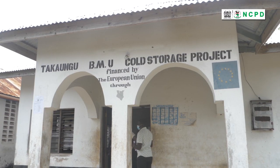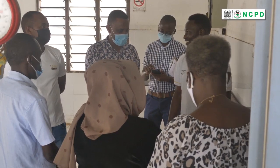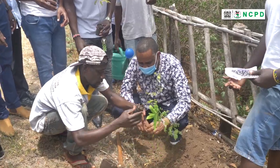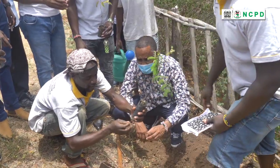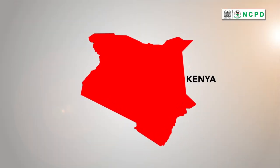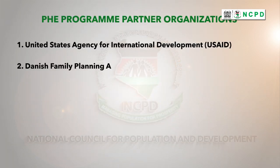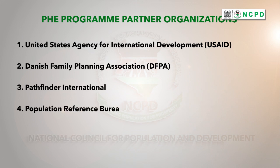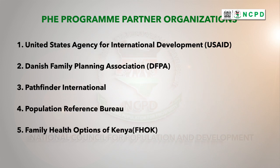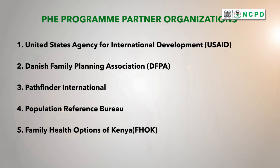In Kenya, the implementation of the PHE programme is mainly supported by the following partner organizations: United States Agency for International Development (USAID), Danish Family Planning Association (DFPA), Pathfinder International, Population Reference Bureau, and Family Health Options of Kenya (FHOK). These organizations are instrumental in advocating for PHE and supporting community initiatives.